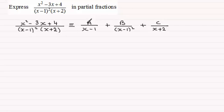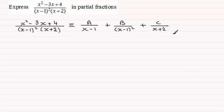It's going to look something like this where we've got a constant over the first linear factor x minus 1, and because it's repeated we write another constant over that repeated factor when it's squared, and then we write another constant C over the next linear factor. I'm assuming that you're familiar with this particular method — if not, do check out an earlier video in this series where I showed you how to handle repeated factors.